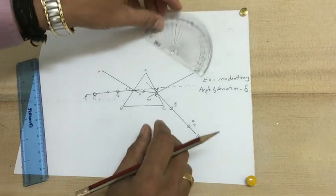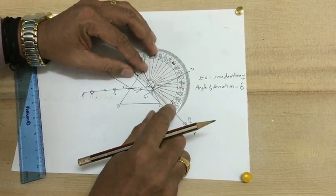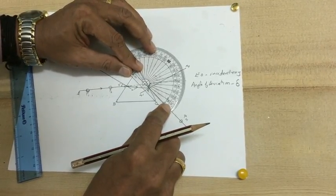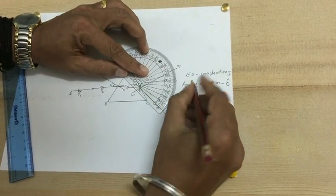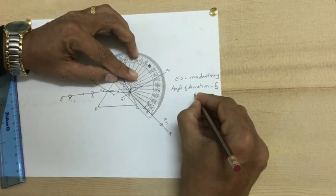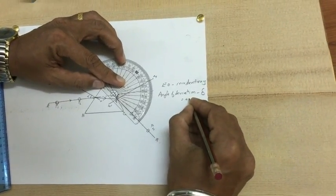With the help of a protractor, you can measure the angle of deviation. In this case, the angle of deviation is equal to 48 degrees.